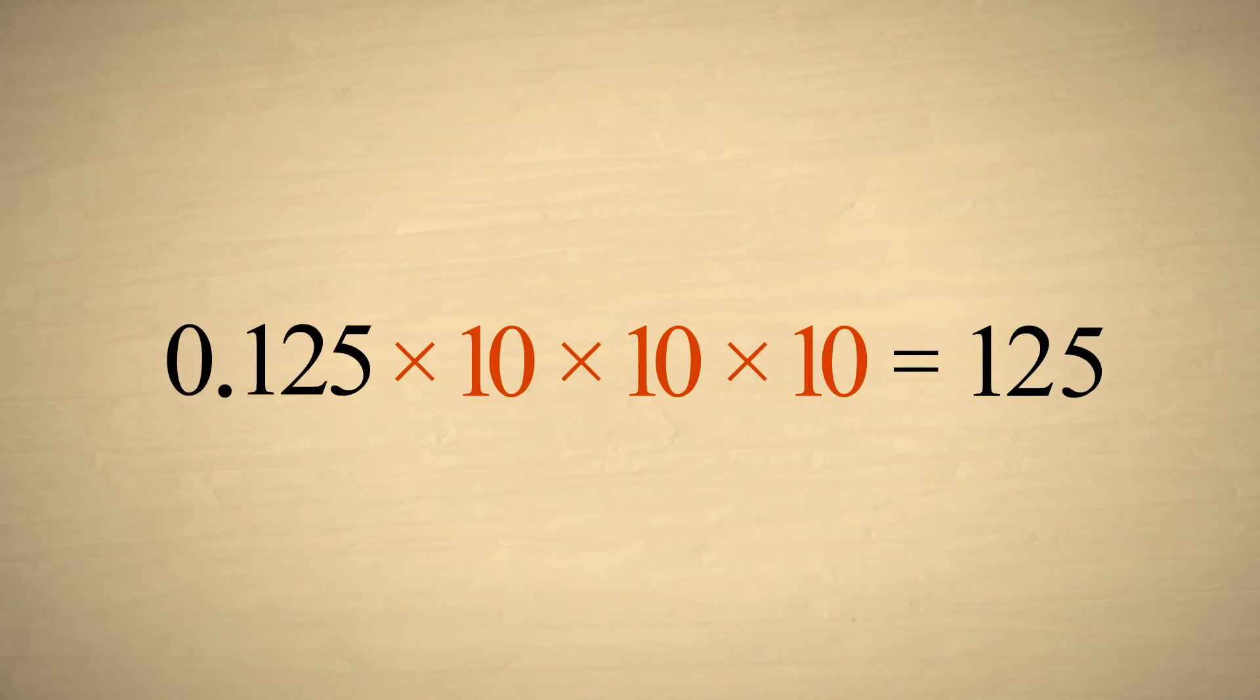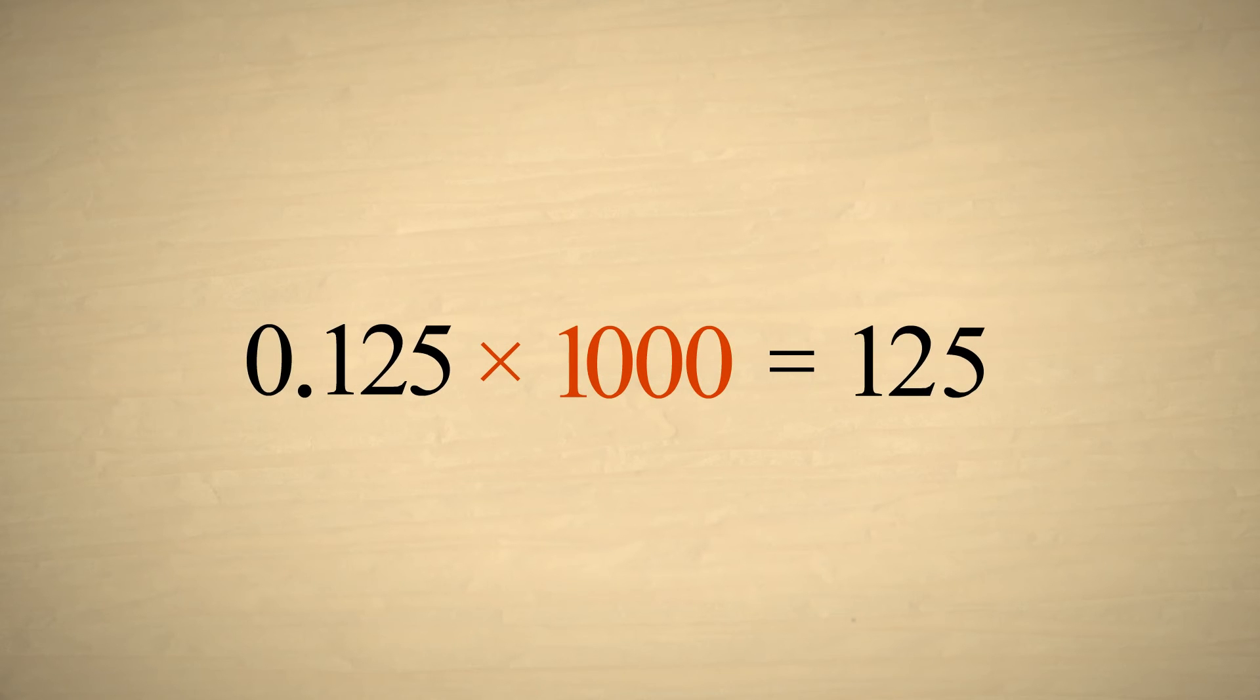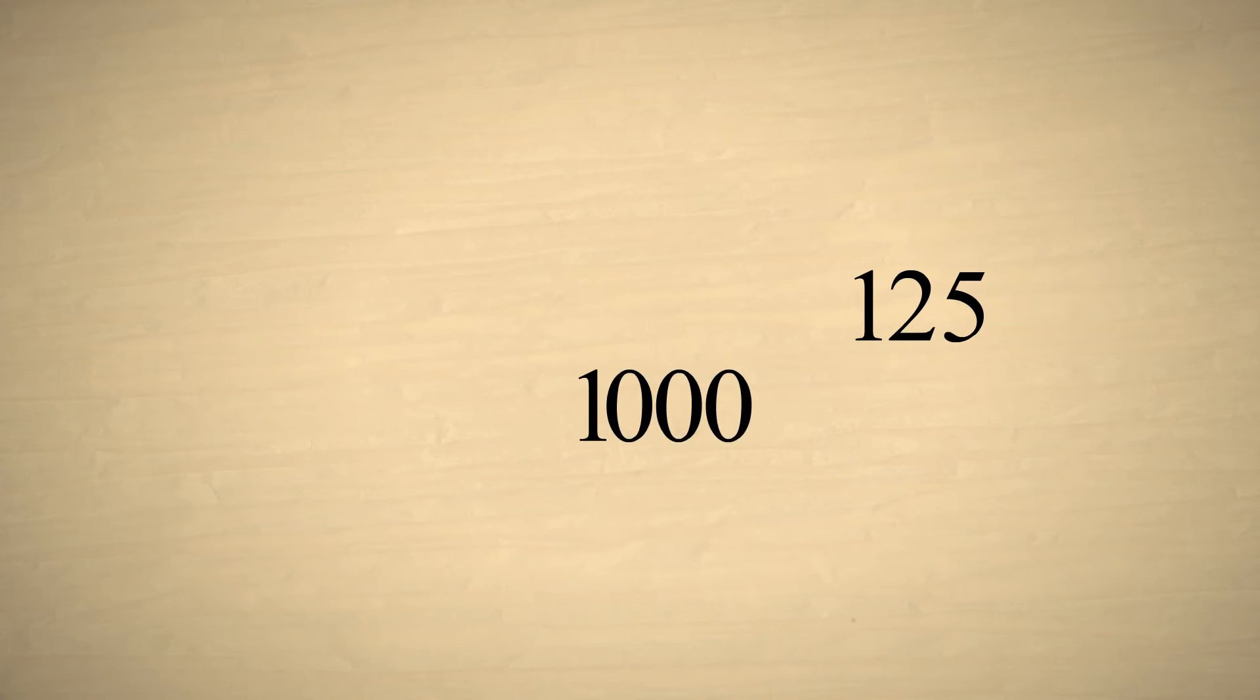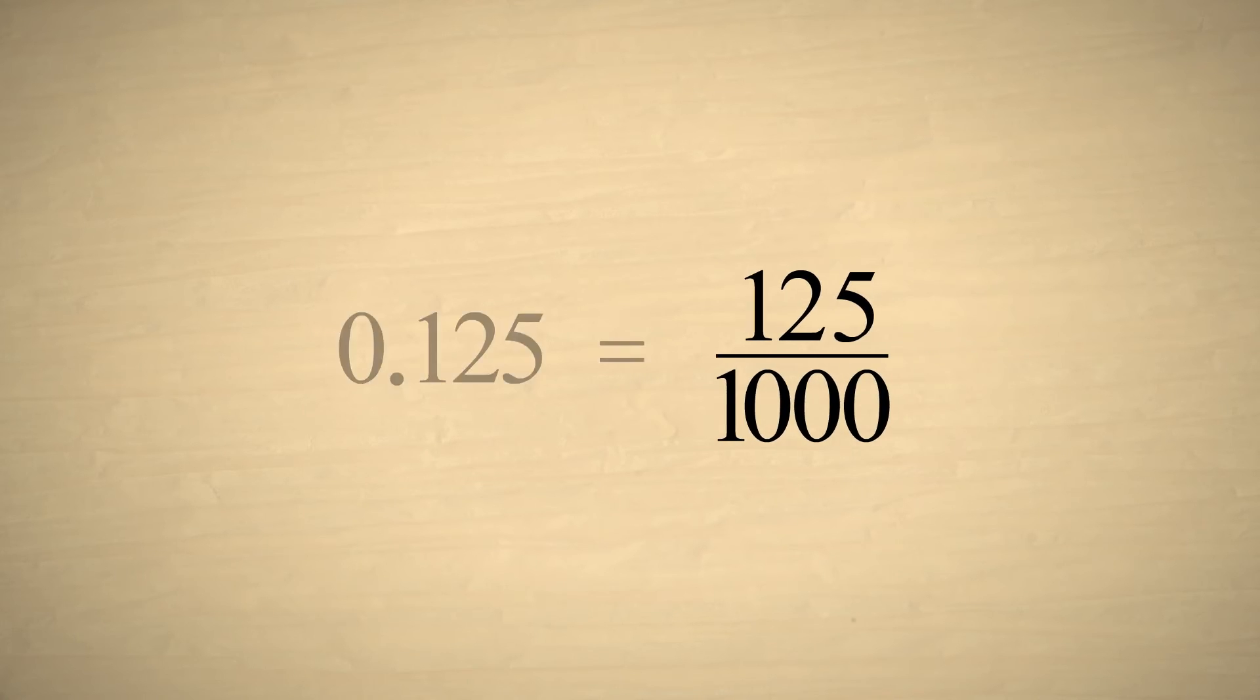So by multiplying our decimal number by ten three times, which is the same as multiplying by one thousand, we have produced an integer which is one thousand times the original number. If we then divide the integer by one thousand, the result will be equal to the original number. So zero point one-two-five is equivalent to the fraction one hundred twenty-five one-thousandths.